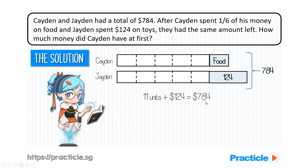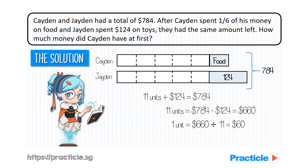From this equation, we can find the value of 11 units by taking $784 minus $124, which gives us $660. Then we take $660 divided by 11, which gives us $60 — that's the value of 1 unit. Now we multiply by 6 to find the value of 6 units, and this gives us an answer of $360. Question solved!